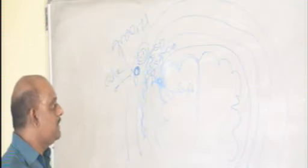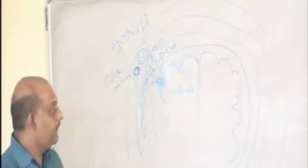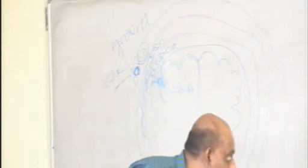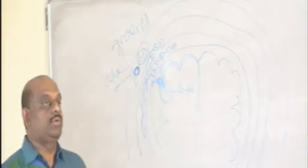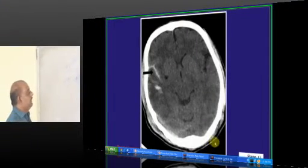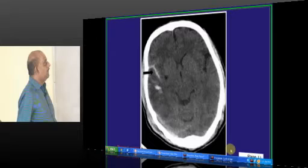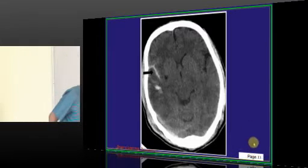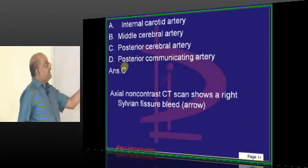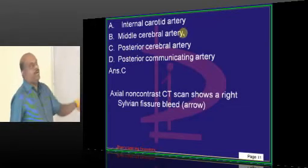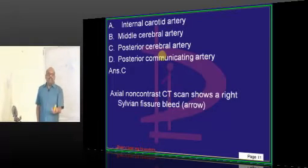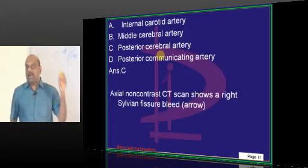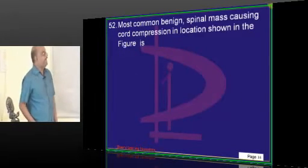Now there is a differential diagnosis for the subarachnoid bleed. There can be an internal carotid artery aneurysm, middle cerebral artery aneurysm, or anterior communicating artery aneurysm. Anything can bleed into the sylvian fissure but not posterior cerebral artery which is part of the vertebrobasilar circulation.